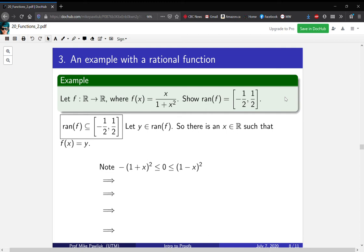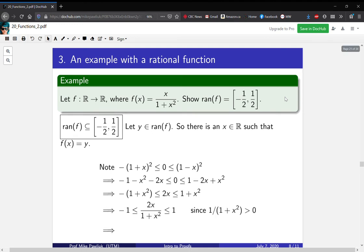If this is true, we expand it. We get -(1 + x²) - 2x ≤ 0 ≤ 1 - 2x + x². Then we add 2x to both inequalities. The left-hand side becomes -(1 - x²). Now we can multiply through by 1/(1 + x²), which maintains the inequalities, since 1/(1 + x²) is positive.